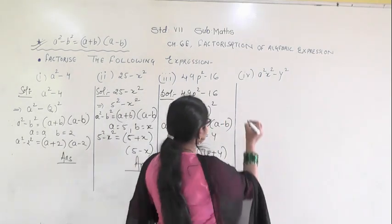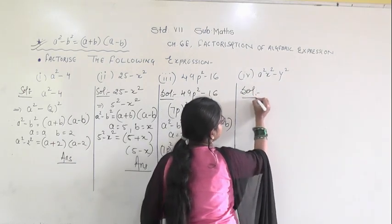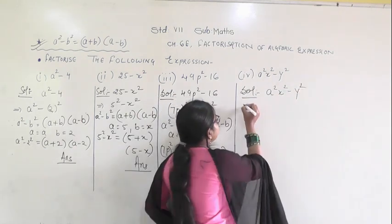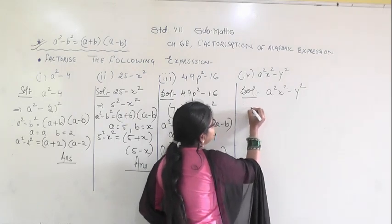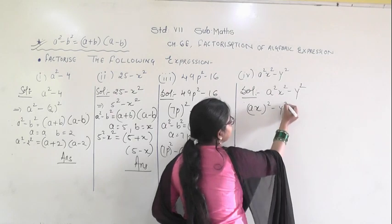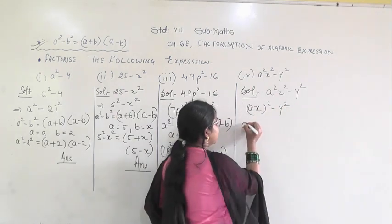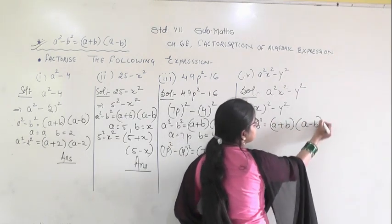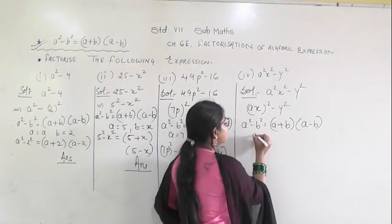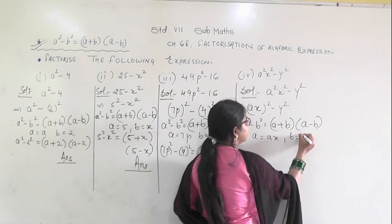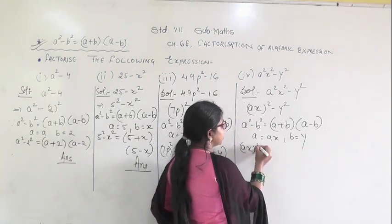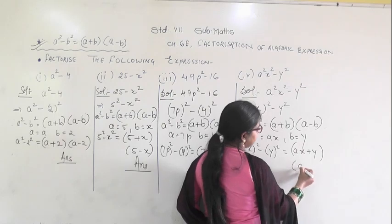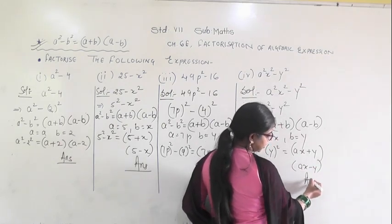In the fourth question you are given a squared x squared minus y squared. Convert this into the form of a squared minus b squared. So I can write (ax) squared minus y squared. Using a squared minus b squared equals (a plus b)(a minus b), where a equals ax and b equals y, substituting gives (ax plus y)(ax minus y). This is the answer.